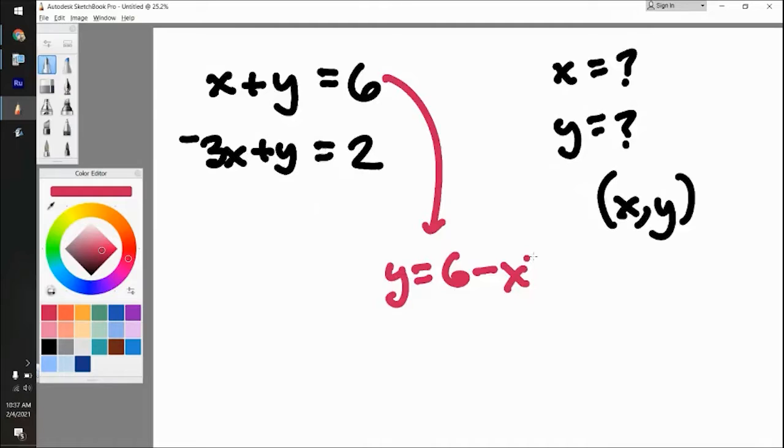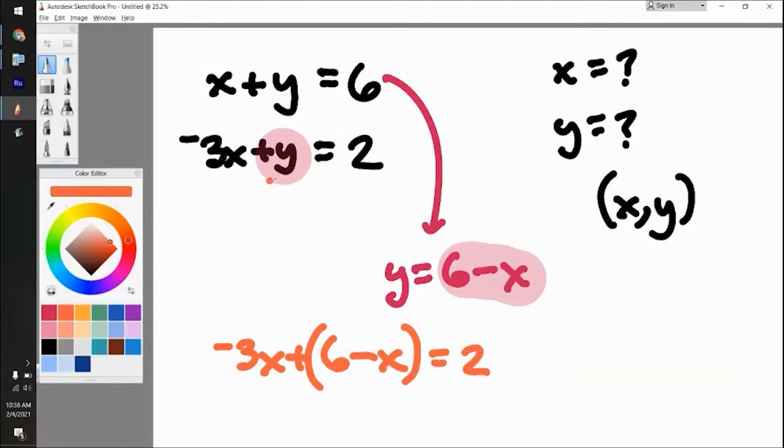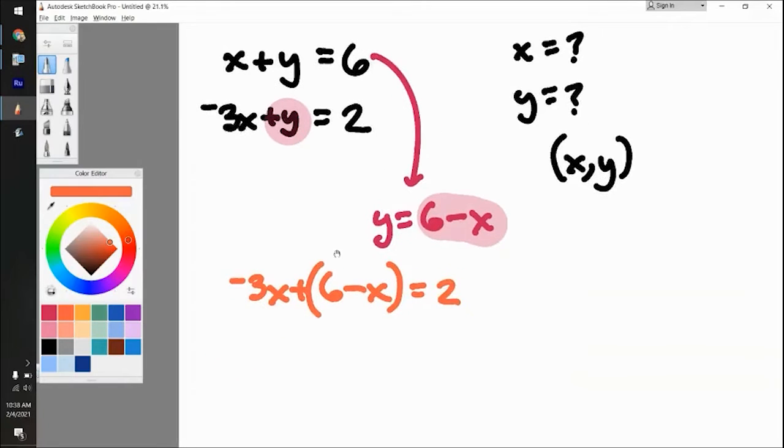So now that y equals six minus x, I'm going to replace that y right there with six minus x. So you're going to be left with negative three x plus six minus x. A good rule of thumb is always put whatever you substitute with parentheses, because sometimes if that was a negative or something like that, it would throw it off because you have to distribute the negative. So I would always put it in parentheses when you substitute.